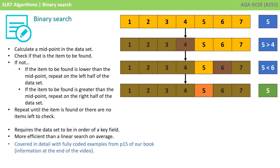With a binary search, we calculate a midpoint in the dataset, and we check if the item at that midpoint is the item we're looking for. If it's not, if it's lower than the midpoint, then we repeat the process on the left half of the dataset, otherwise we repeat it on the right half. A binary search requires the data to already be in order of a key field, and it's more efficient than a linear search on average.